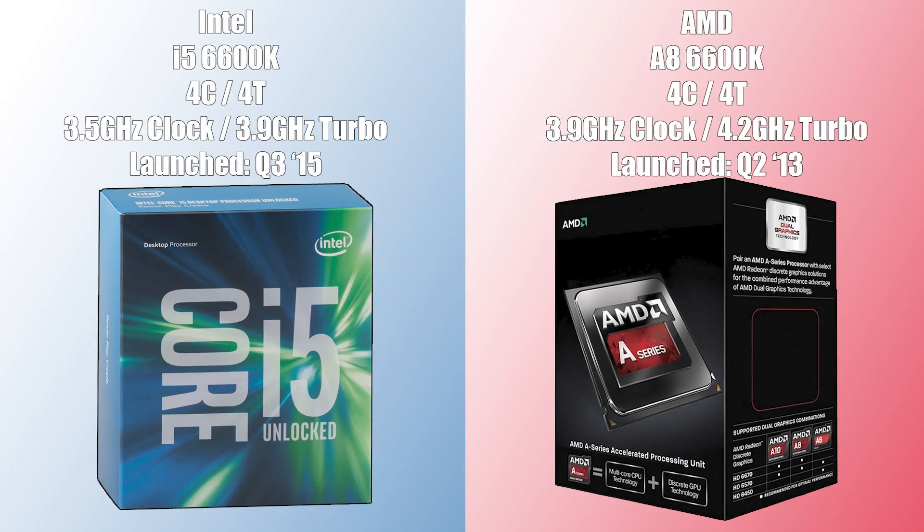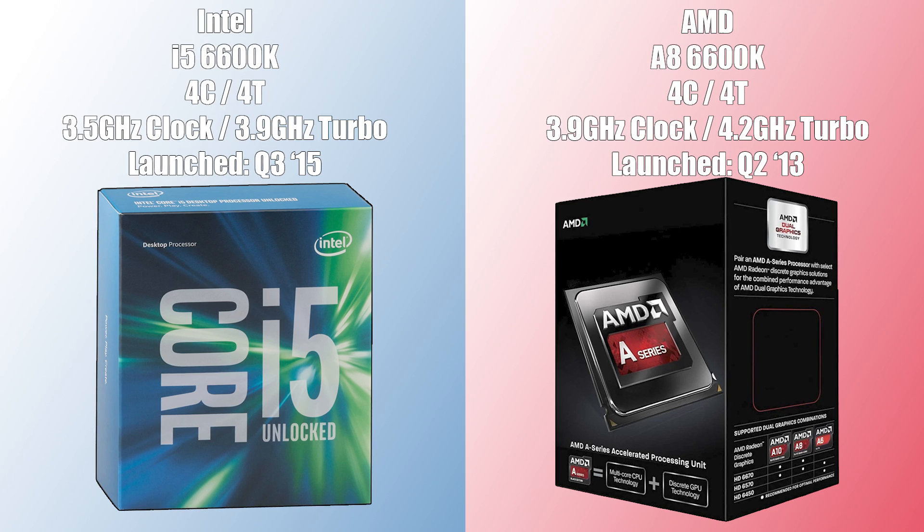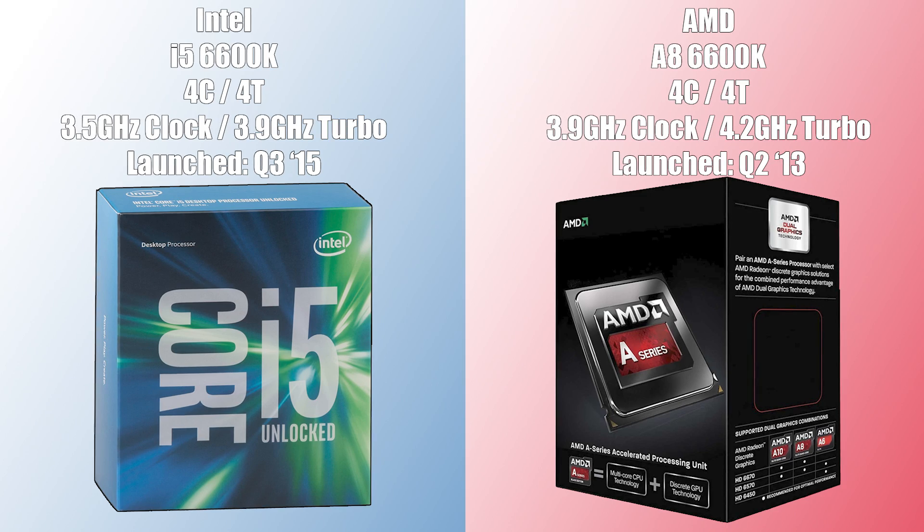The AMD 6600K launched in 2013 and Intel's i5 6600K launched in 2015, at totally different price points. These should not be compared in any way, but for the sake of viewer requests we'll see which 6600K is more deserving of its namesake — the most unrealistic and probably most odd comparison in the CPU world. Battle of the 6600Ks. Let's get into it.